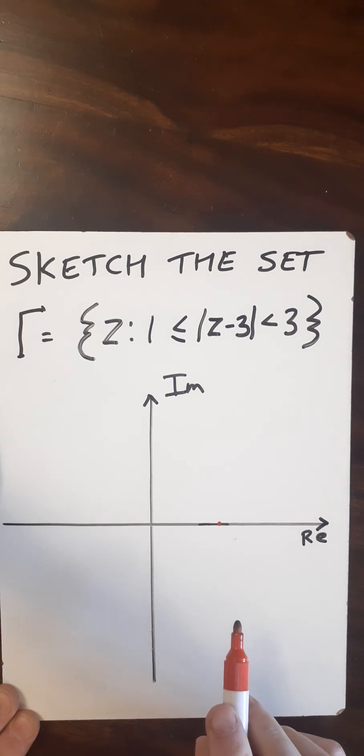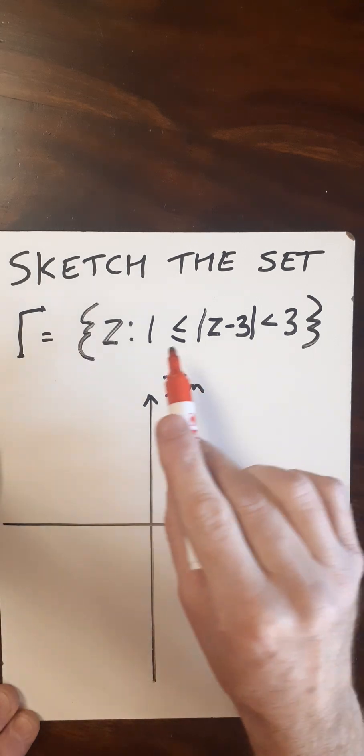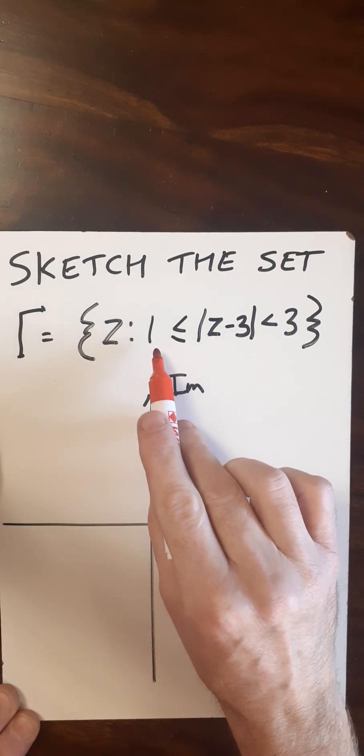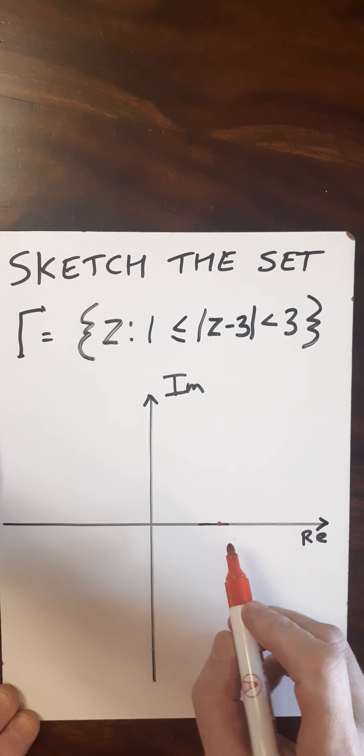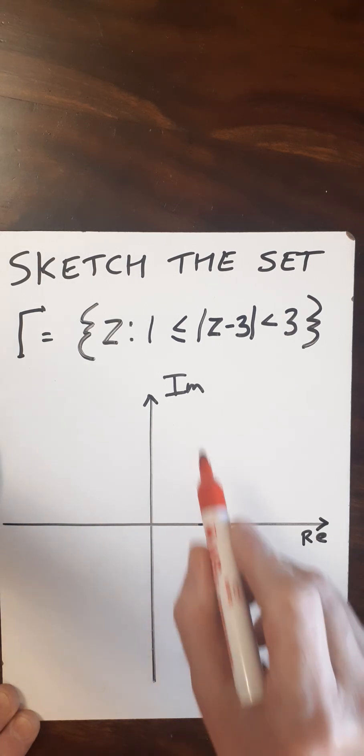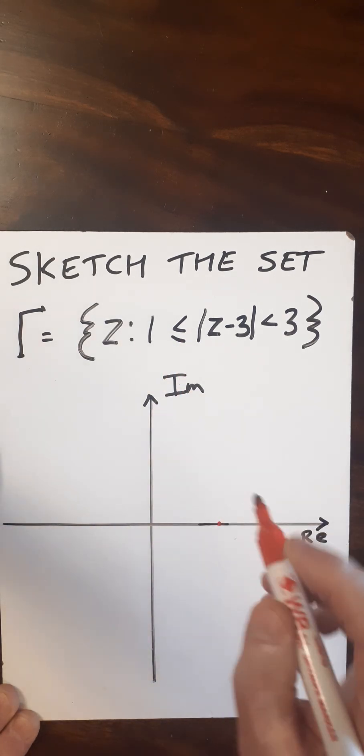Now, what we're going to get here are two circles to form our annulus. We've got the modulus of z minus three is greater than or equal to one. So now we need a circle of radius one from this point, and it includes the boundary points.